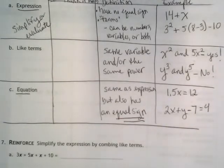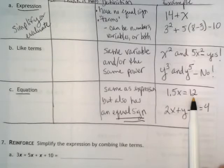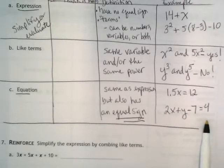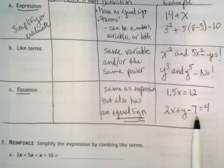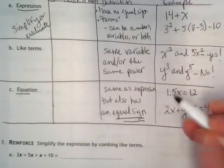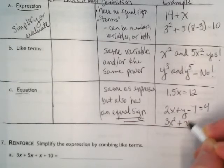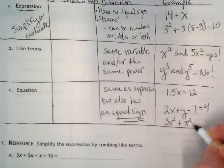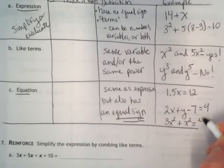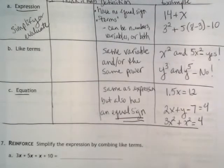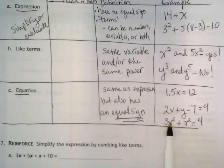Equations can look lots of different ways. I'm giving you a couple of examples here. 1.5x equals 12. 2x plus y minus 7 equals 4. These are all what we call terms. It could also be something where you have to combine like terms. So I could have 3x squared plus x squared equals 4. And I would end up putting these two together because they're like terms.